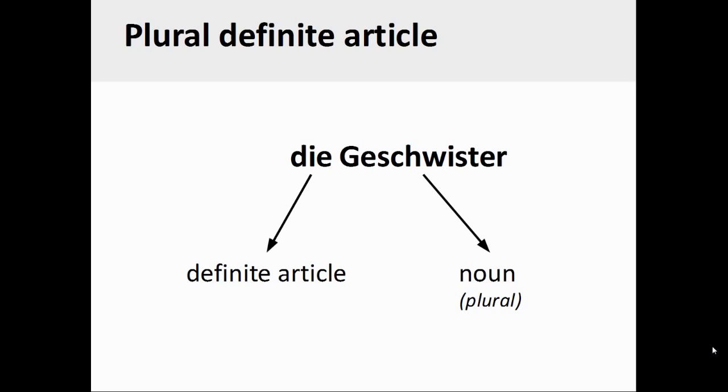Finally, the German noun Geschwister, meaning siblings, refers to a group of people, and therefore is automatically a plural noun. Its definite article will always be die.